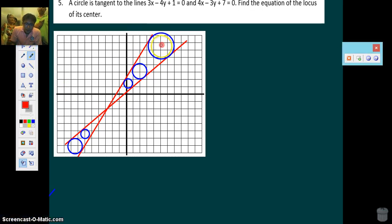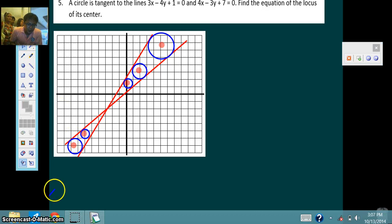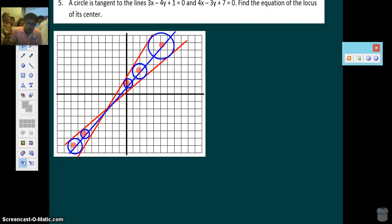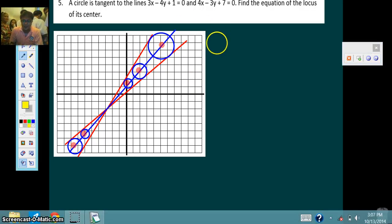But we are asked to find the locus of the center of the circle. So let's trace them. The center of the circle is here. The center of the smaller circle is here. The center of the smallest is there. Center, center. So what do you think is the locus of the center? Yeah, you're right. The locus of the center is a straight line connecting those centers. And it's none other than the angle bisector of the two red lines.